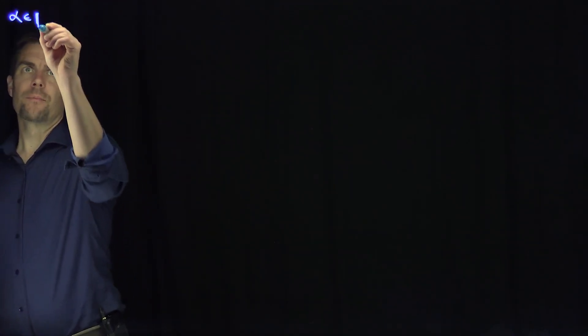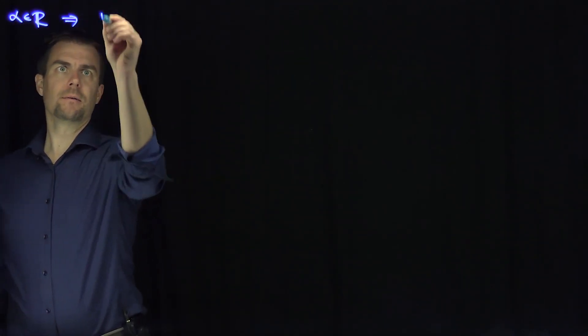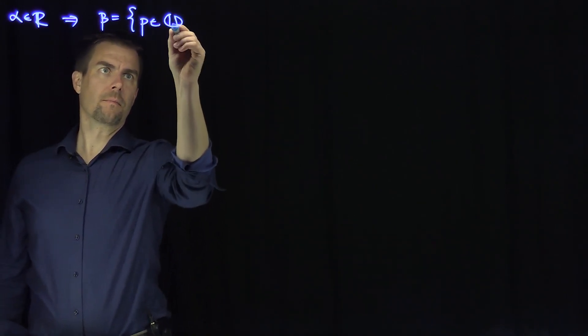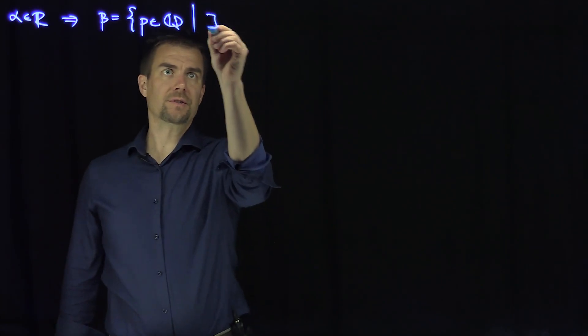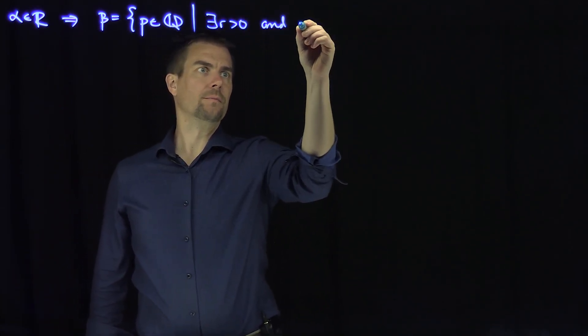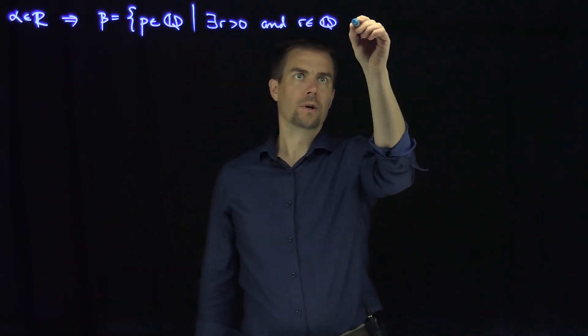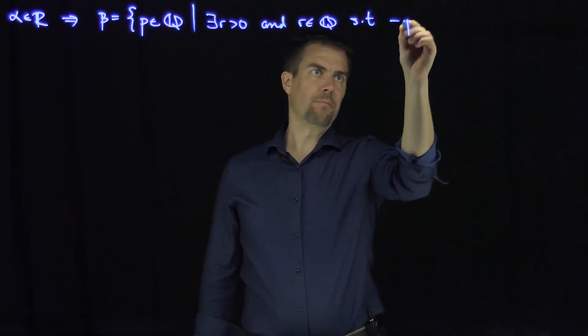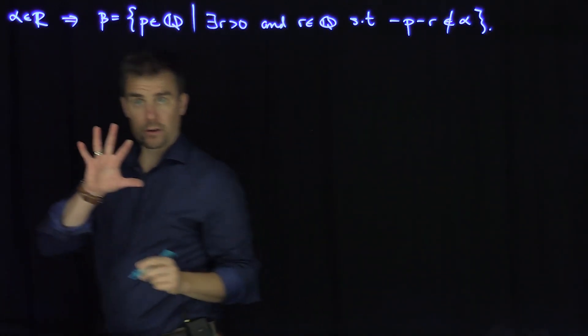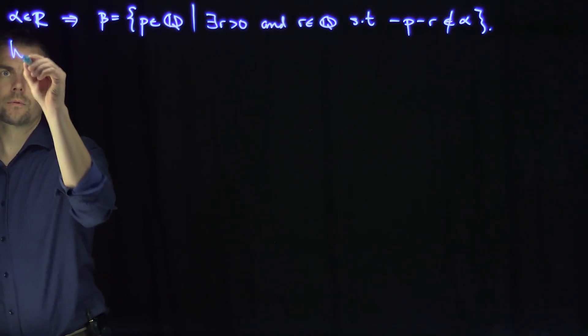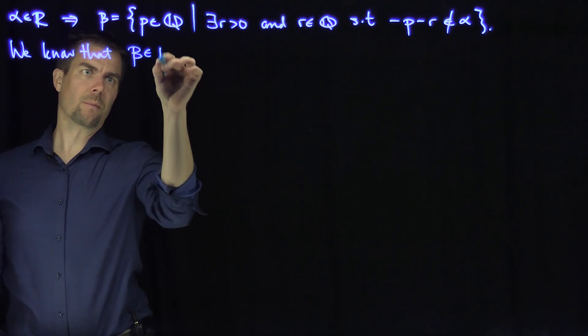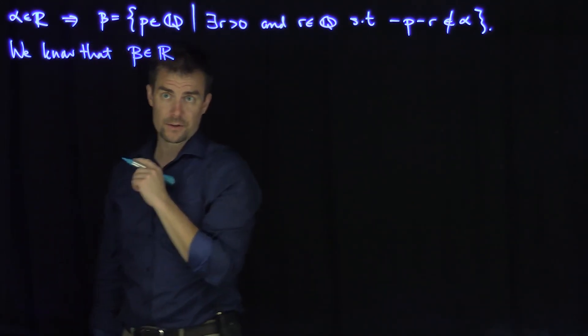Recall that if alpha was a real number, we had the corresponding set beta, which is the set of all p and q such that there exists an r greater than 0 and r in Q, such that negative p minus r is not in the cut alpha. In the previous video, we already proven that beta is a real number, i.e., it satisfies the cut conditions.